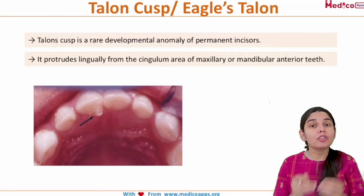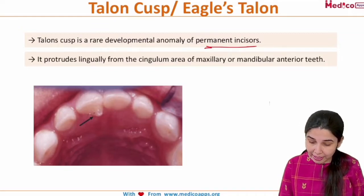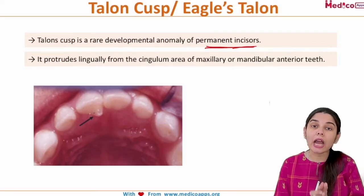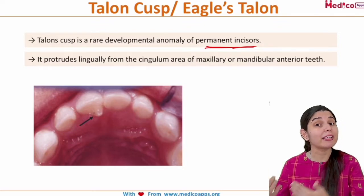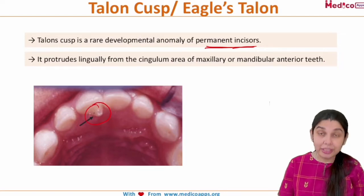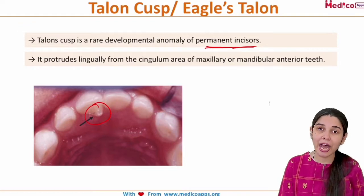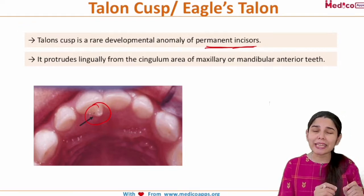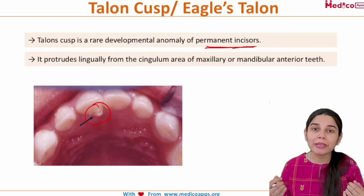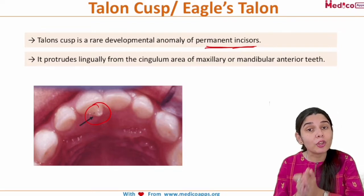Where is this present? This cusp is basically present in the permanent incisors of the maxillary and mandibular teeth. It protrudes lingually — lingually means towards the tongue — from the cingulum area.